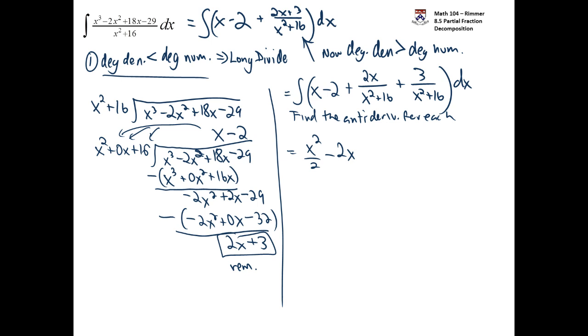With that one, we just need a u substitution. If we let u be equal to x squared plus 16, then du is 2x dx. And that's exactly what we have for the numerator. So we're looking at du over u or 1 over u du, which is the natural log of the absolute value of u. And so this is going to be the natural log of the absolute value of x squared plus 16. That's always going to be positive. You can drop the absolute value, but that's okay.